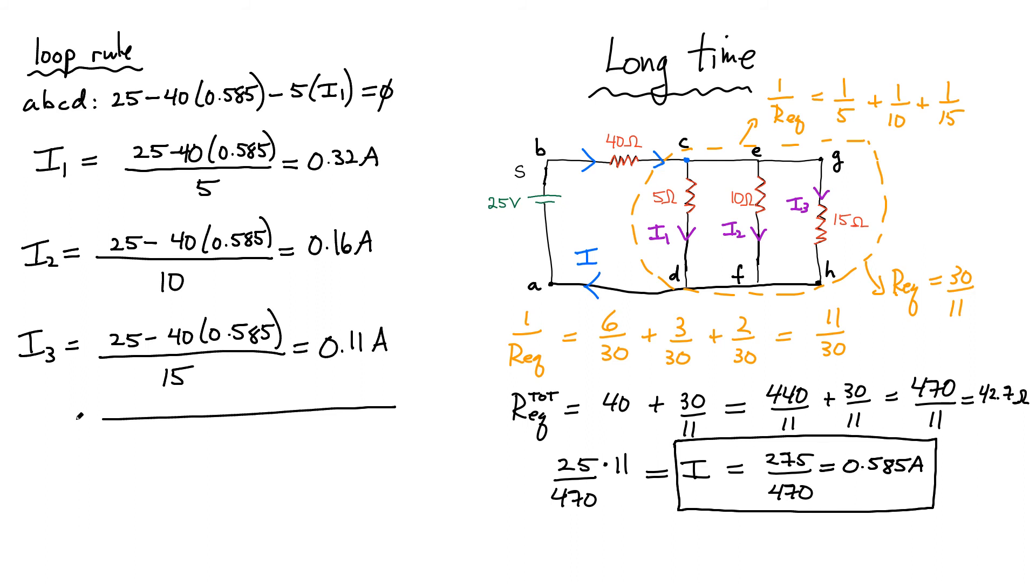Now we have the current in each branch. You can actually add all of those up. 0.32 plus 0.16 plus 0.11. Lo and behold, we're going to get the current I at the end if you add all of those up. There might be a little bit of error due to rounding. But if you add up I1 plus I2 plus I3, that's basically a junction rule applied to junction C, you have to get the current I that we obtained in the first part.